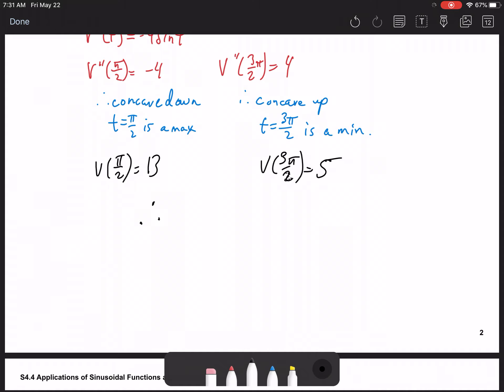So therefore, maximum voltage is 13 volts. Now, although it occurs at π/2 seconds, when else does it occur? Since we know how sine operates, we know that it occurs every 2π units after that. So you can actually say at π/2 seconds, and 2π seconds after that.